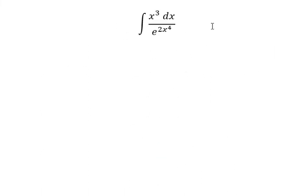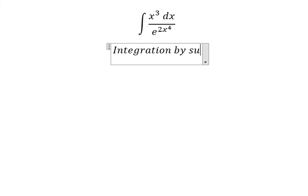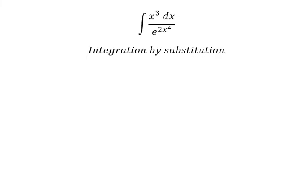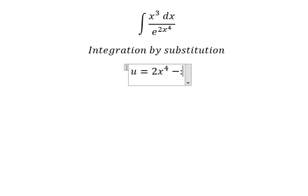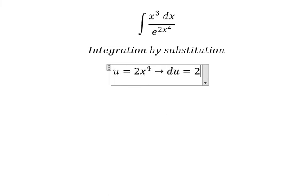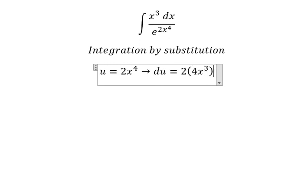Question number 2: we need to use integration by substitution. I will put u equal to 2x to the power of 4. Then we do the first derivative for both sides, so you get du equal to 8x to the power of 3 dx.